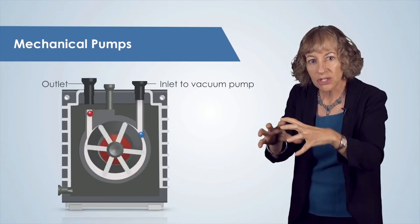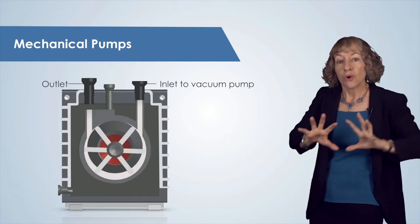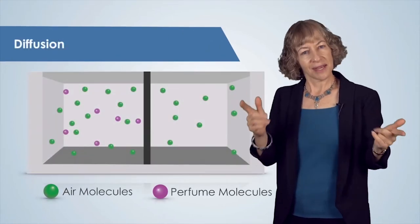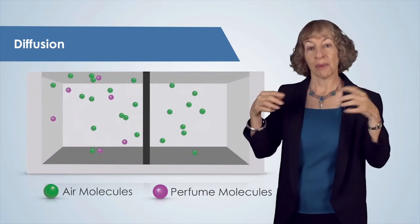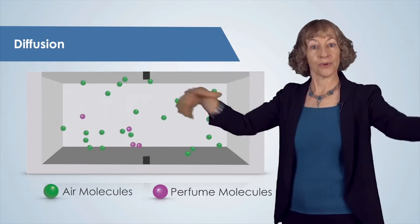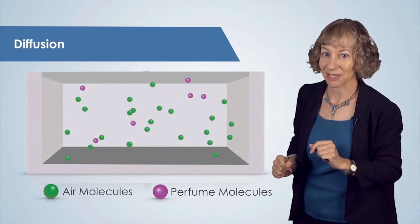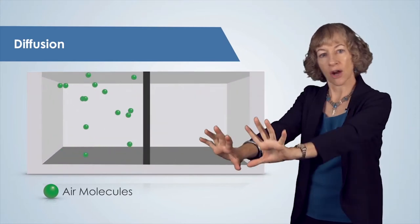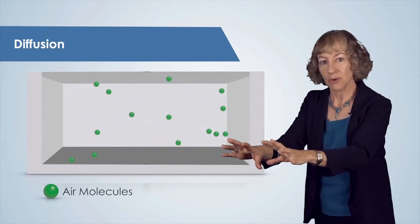This low pressure region in the chamber near the pump causes the air in the rest of the chamber to move toward the low pressure region. This movement of air is called diffusion. The same process is at work in vacuum systems — the pump pushes air out of the vacuum chamber, and the remaining air in the chamber will diffuse toward that low pressure region.